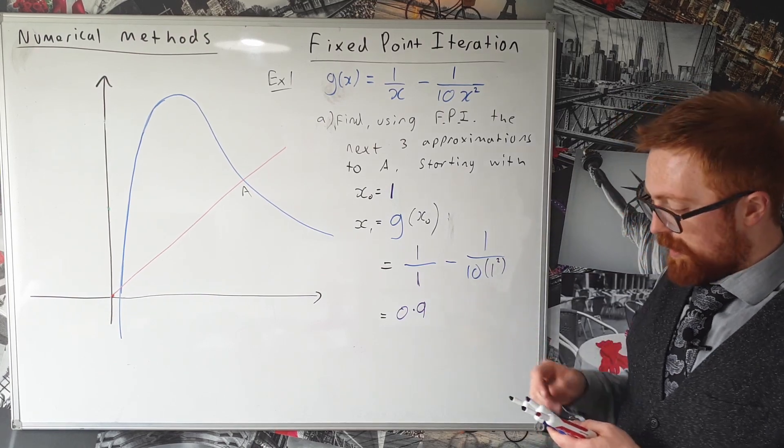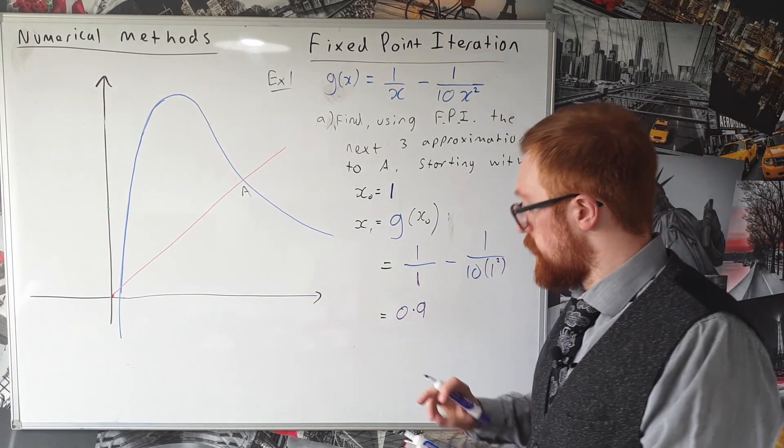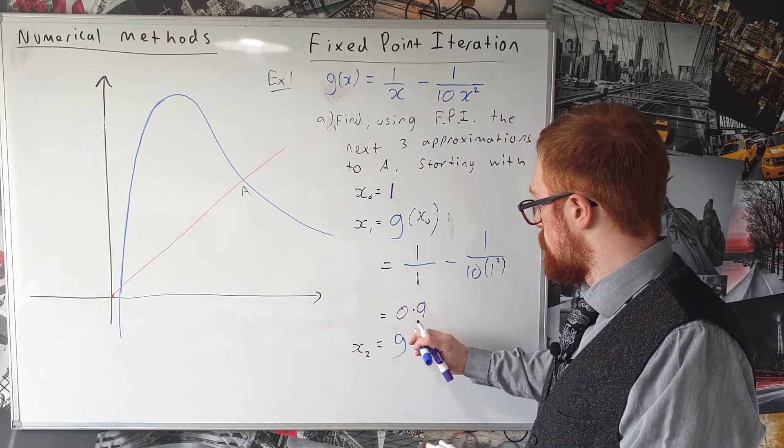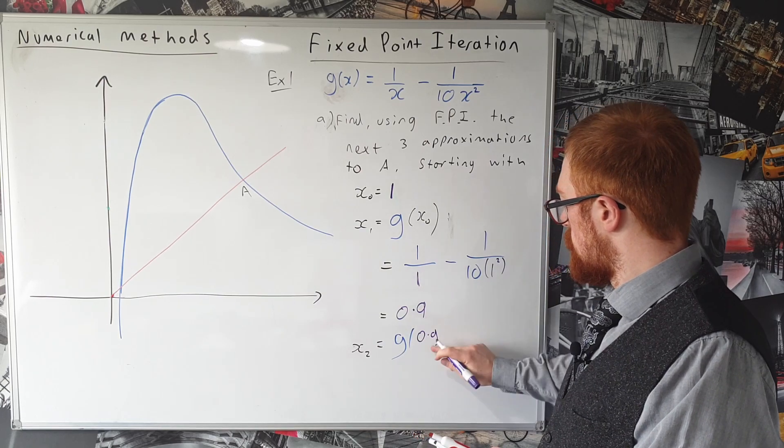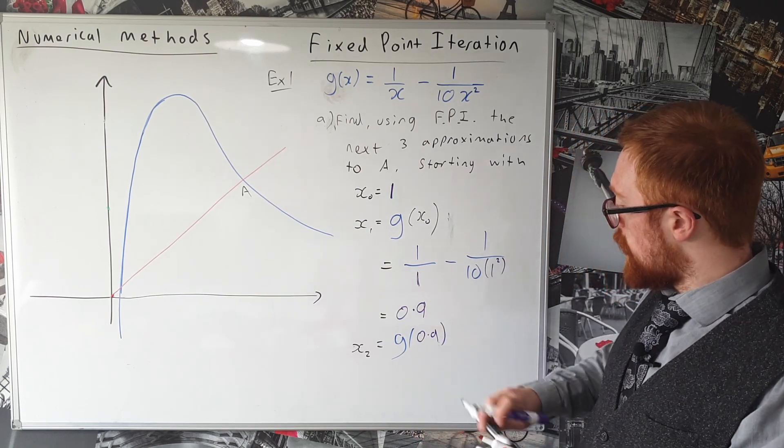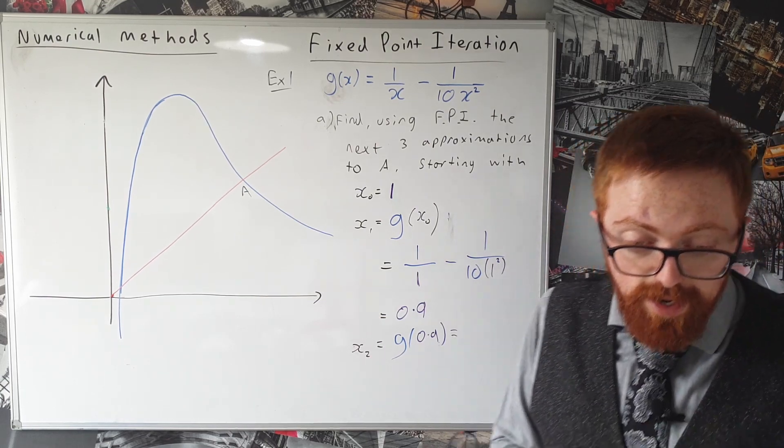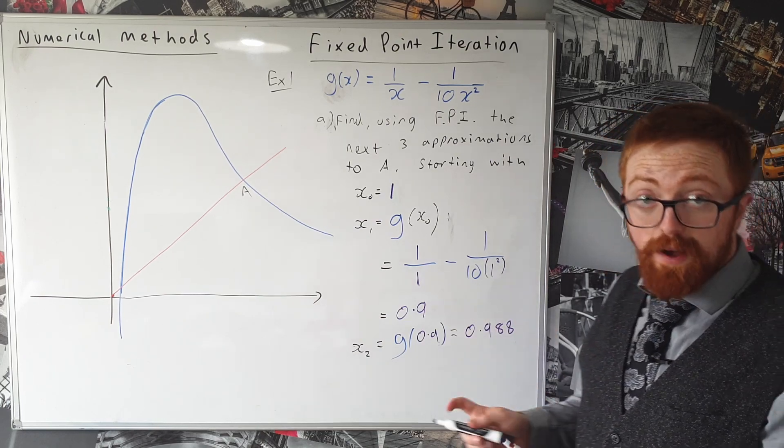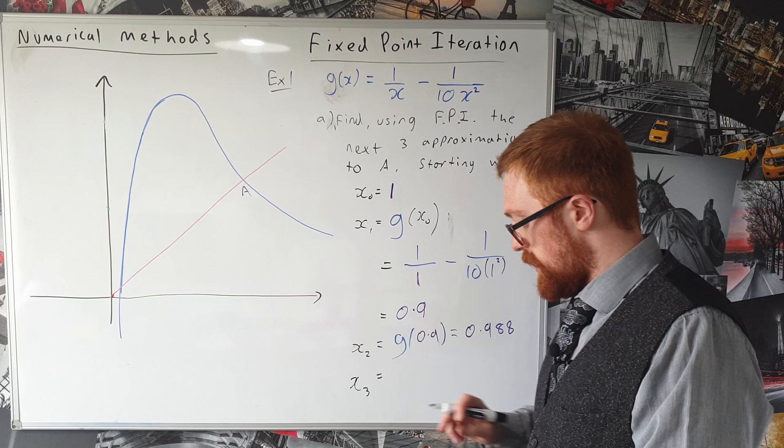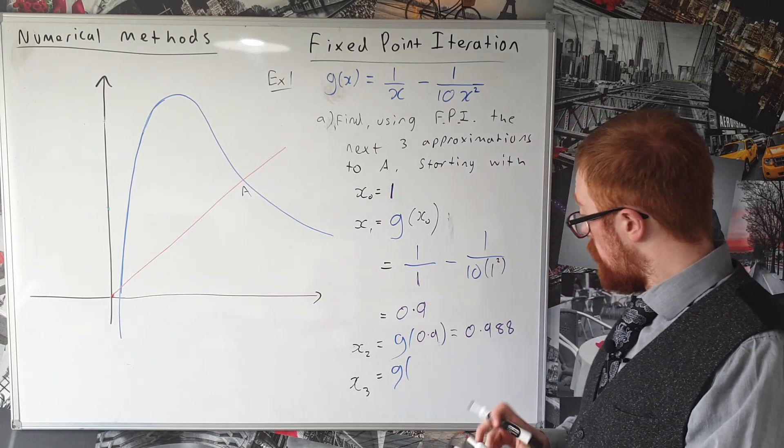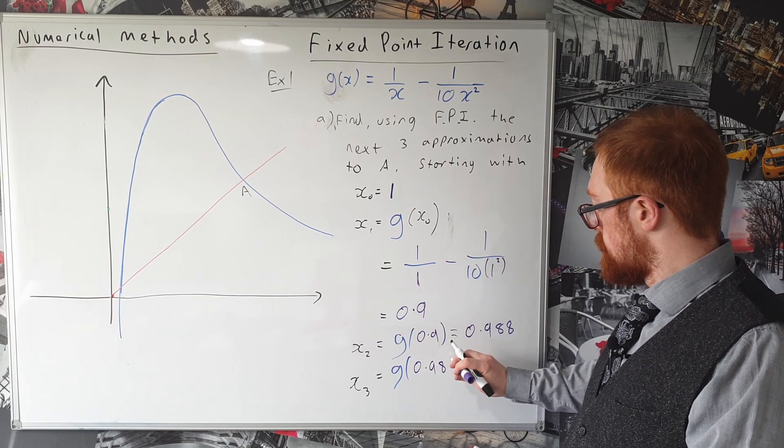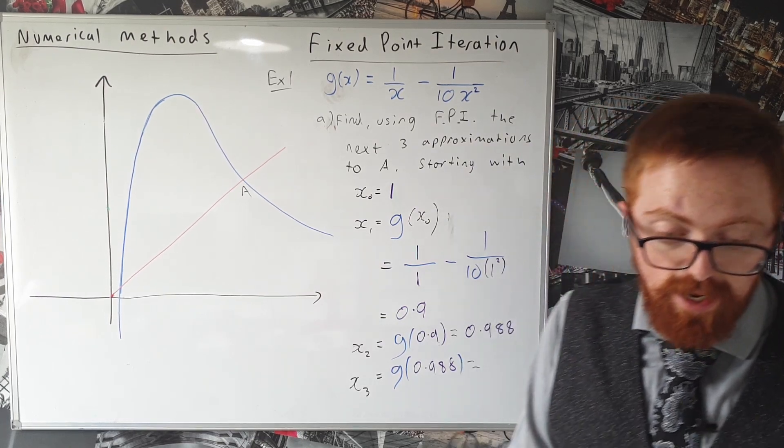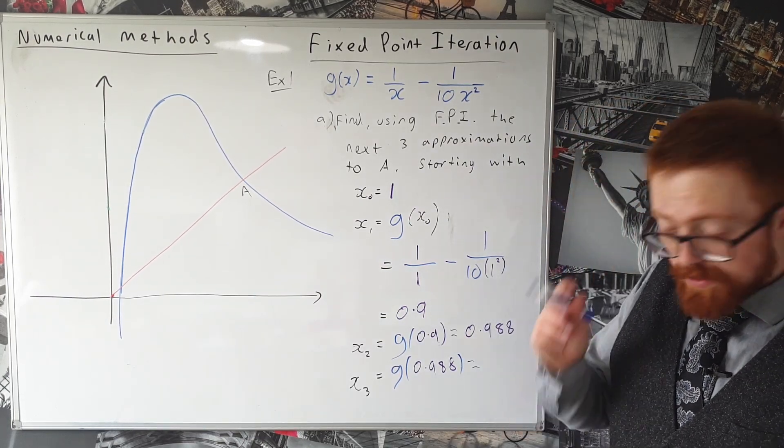Okay now the way we work out the next ones is we do x_2 is g of 0.9 which is equal to 0.988 and then for our final and third approximation we do x_3 is equal to g of 0.988 where we get that's equal to 0.910 if we round it.